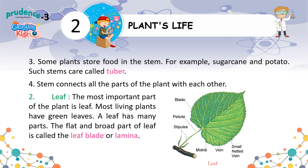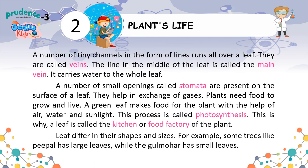Stem connects all the parts of the plant with each other. Leaf. The most important part of the plant is the leaf. Most living plants have green leaves. A leaf has many parts. The flat and broad part of the leaf is called the leaf blade or lamina. A number of tiny channels in the form of lines run all over a leaf. They are called veins. The line in the middle of the leaf is called the main vein. It carries water to the whole leaf. A number of small openings called stomata are present on the surface of a leaf. They help in exchange of gases.